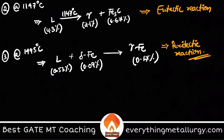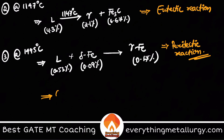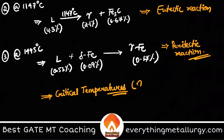At any temperature you can draw a tie line and use the lever rule to find the fractions of the phases and the carbon composition in those phases. This is a simple overview of the iron-carbon diagram. You should also go and study the critical temperatures: A1, A2, A3, A4, and Acm.